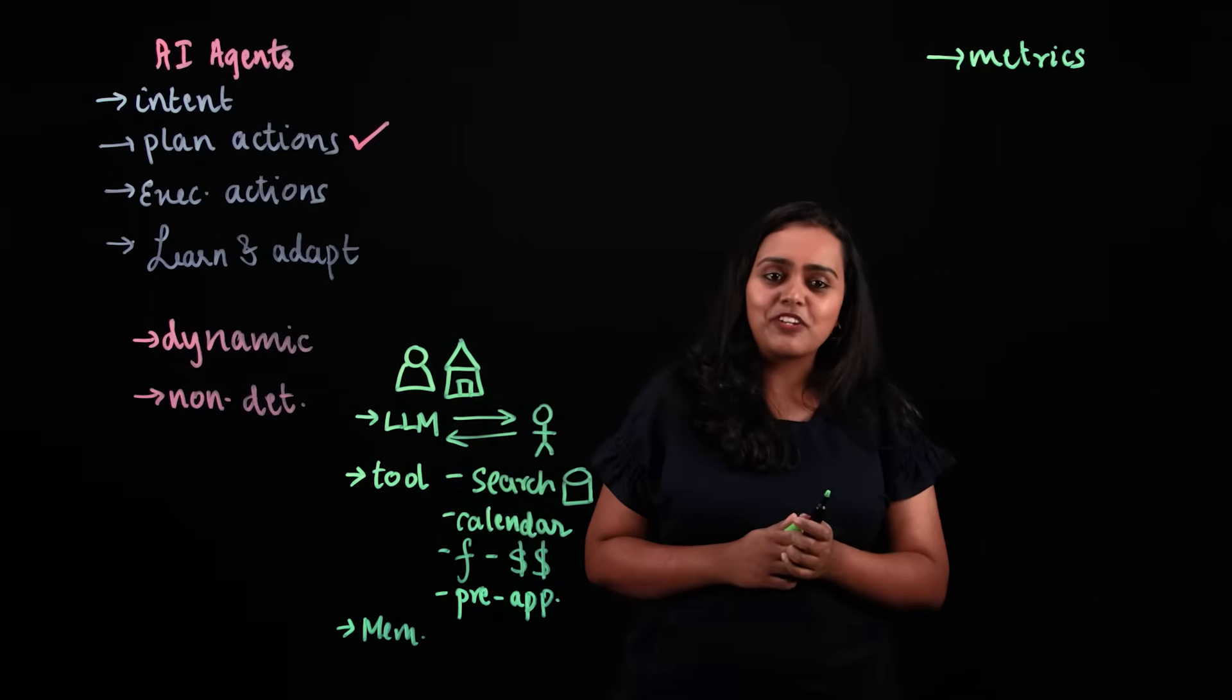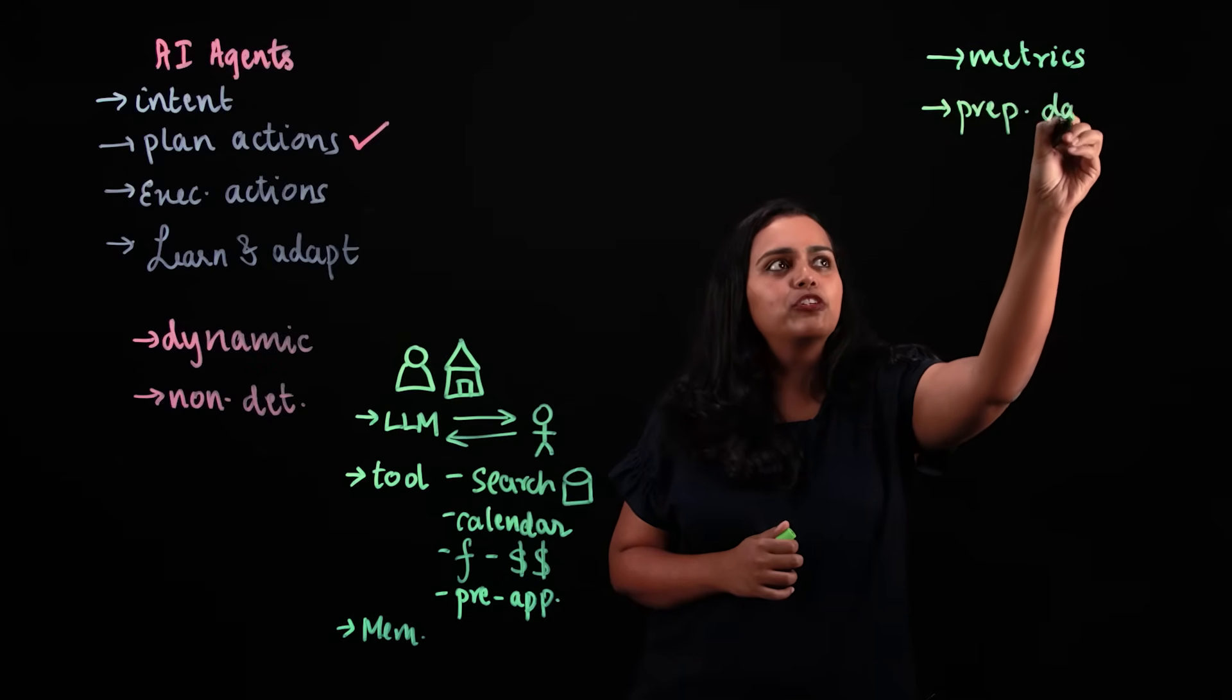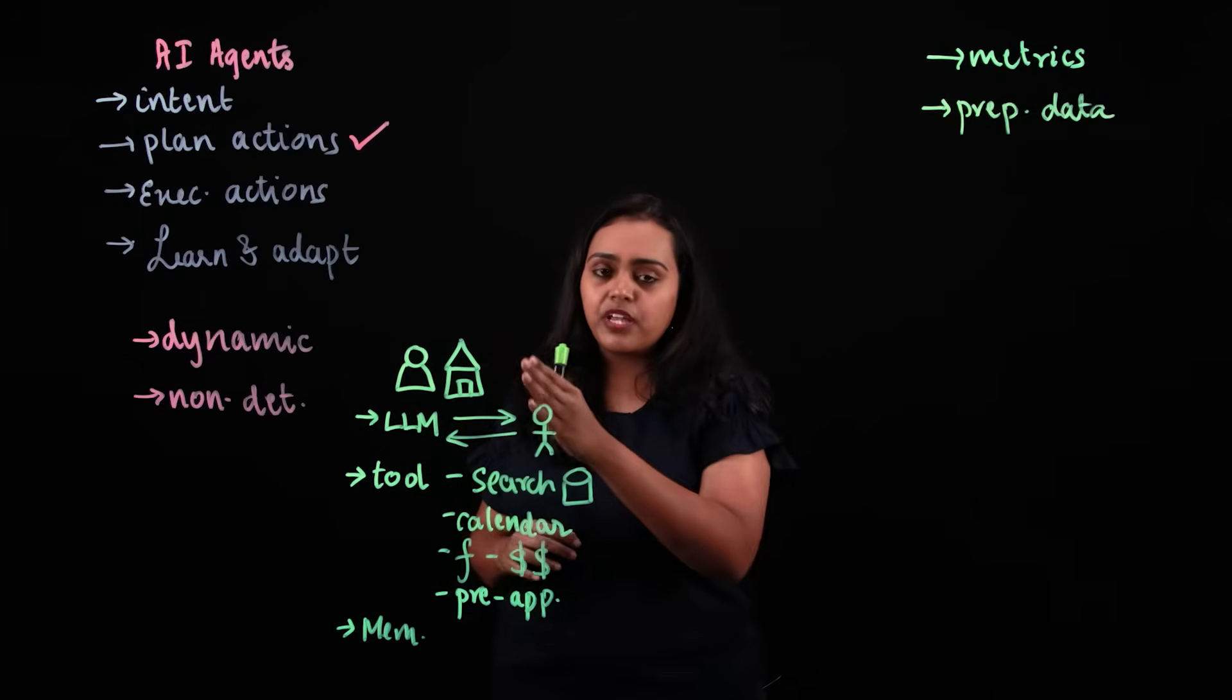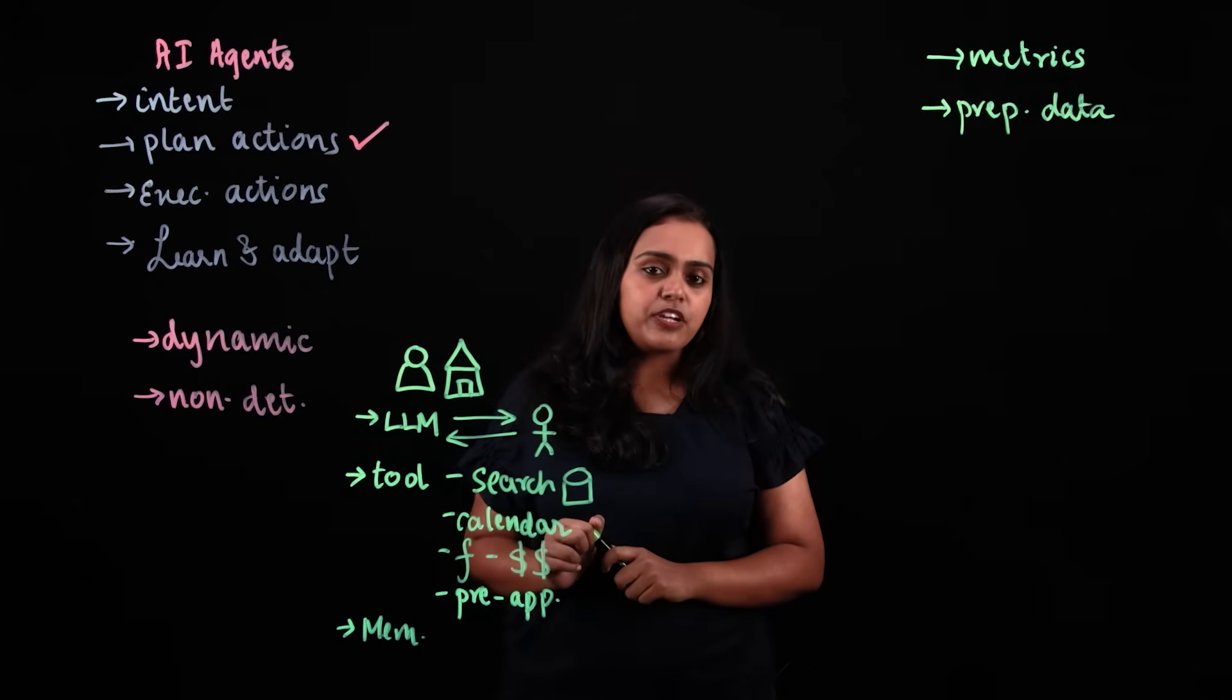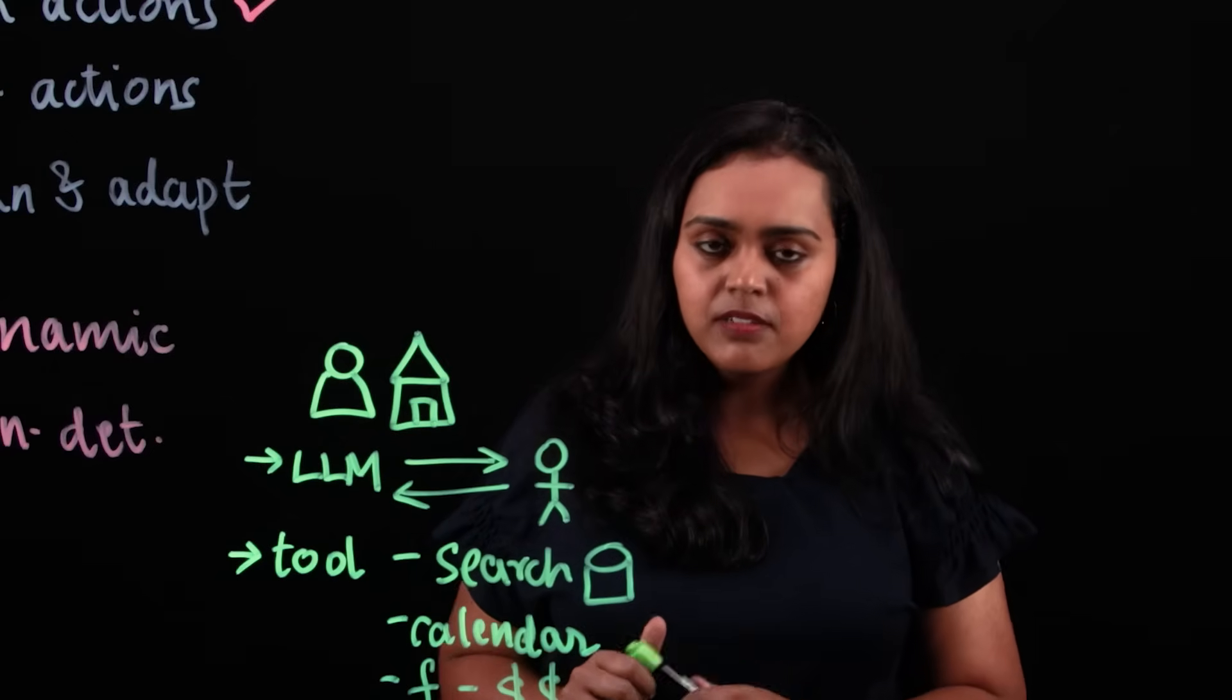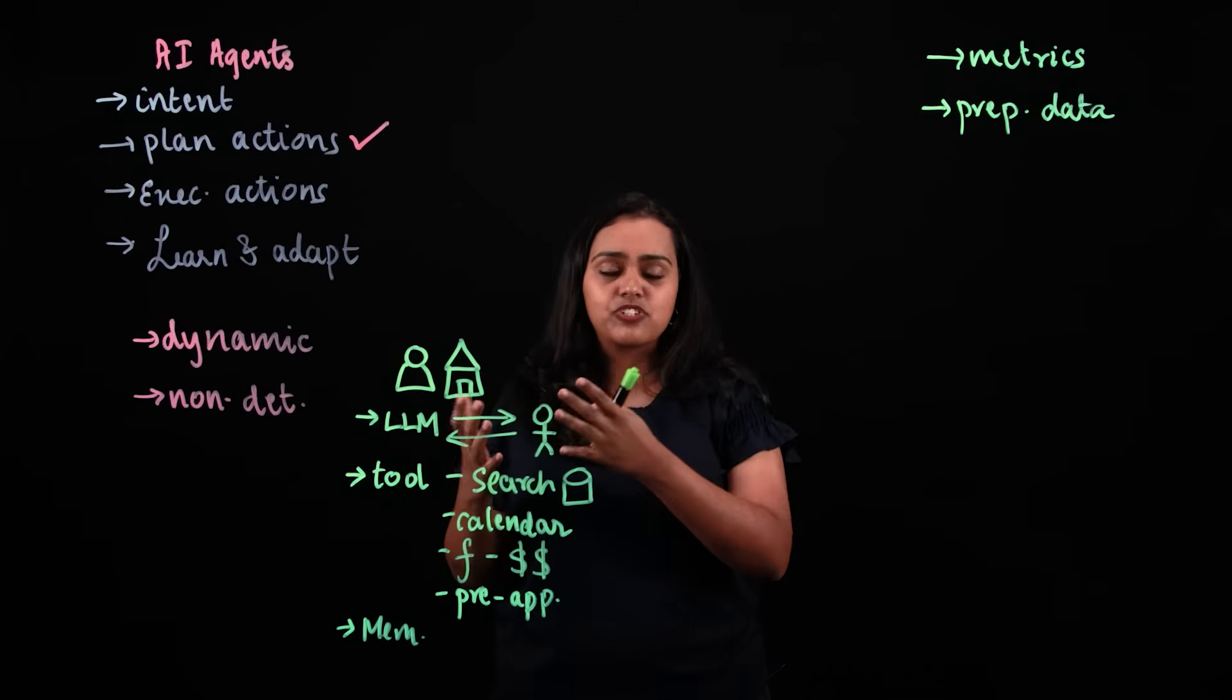Once you have those metrics figured out, the next thing you would do is prepare data. When you do this, you need to make sure that you account for all kinds of scenarios and all kinds of routes that your agent is likely to take. Simulate as many real-world scenarios as possible. Also, if you have metrics that require ground-truth data, make sure you capture that dataset so that you can compute the metrics once you capture your agent outputs.